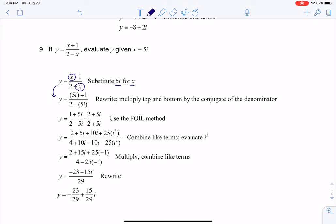And then I'm going to make a little sidestep here. So if I were to rewrite this, I have y equals 5i plus 1 over 2 minus 5i. And we typically write the real part of your complex number first, and then the imaginary part. So instead of writing 5i plus 1, we'll write 1 plus 5i. So we usually write that real part first.